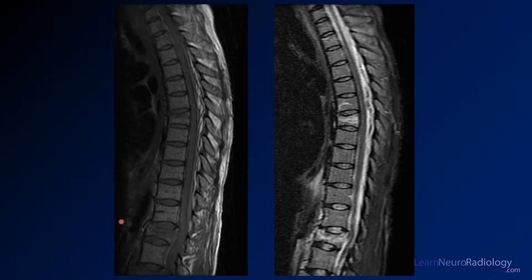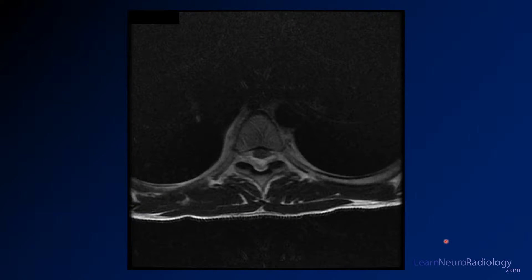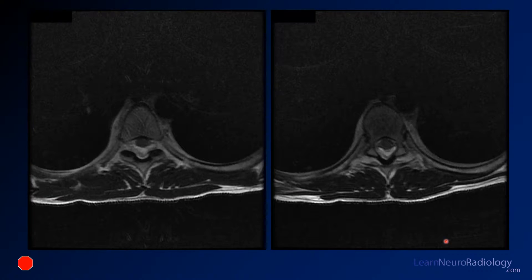It's a little bit challenging to tell what kind of images you're looking at. This is a T1 pre-contrast on the left and this is the T2 on the right. Here we have some axial images through the area of abnormality — this is a T1 weighted image — and a couple of additional axial T1 weighted images through a few adjacent levels.